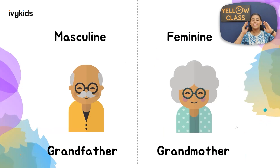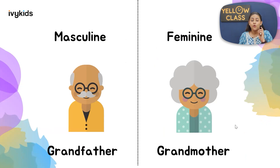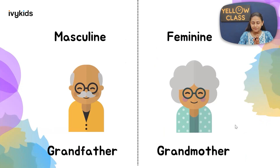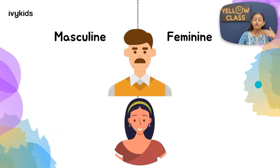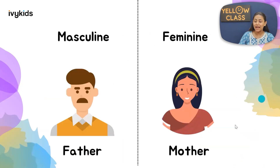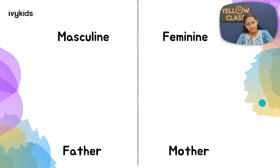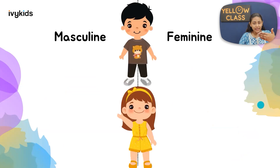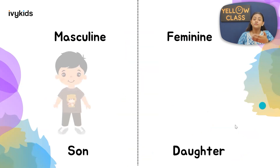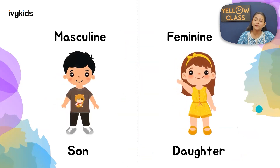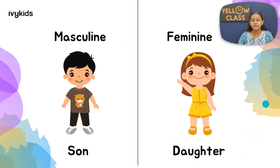Grandfather is masculine, grandmother is feminine. You can type M for masculine and F for feminine to keep it short. Next: father is masculine and mother is feminine. Similarly, son is masculine and daughter is feminine.